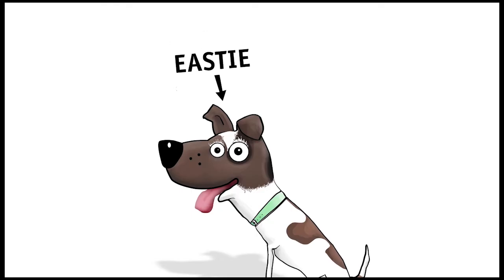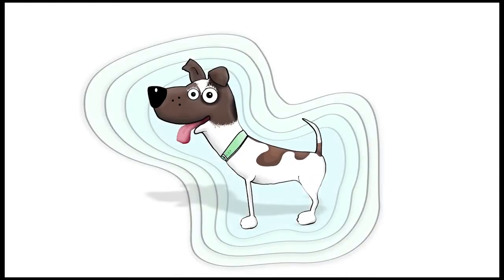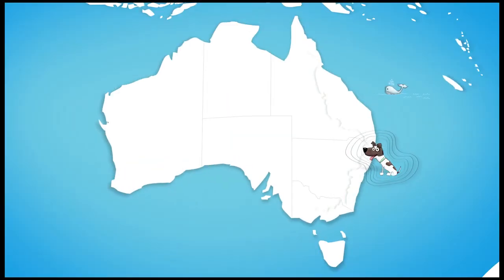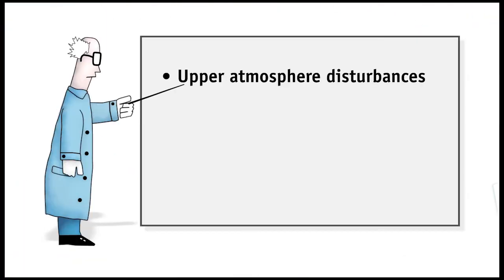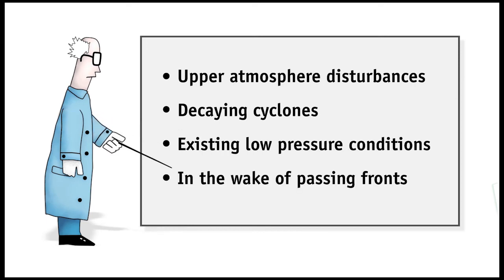This is Eastie, better known as the East Coast Low. Eastie represents the deep low pressure systems that are an important climate feature along the South East Coast of Australia. These deep low pressure systems can be caused by upper atmosphere disturbances, decaying cyclones, existing low pressure conditions, or in the wake of passing fronts.